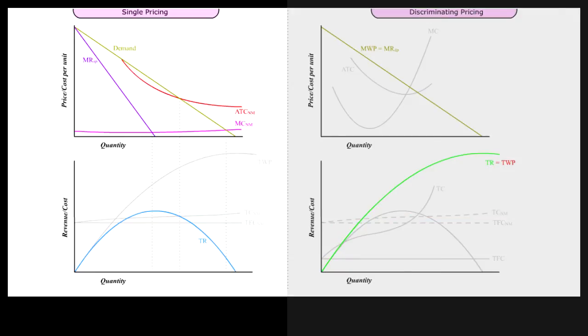Observation 3: MC is below ATC consistently under natural monopoly.